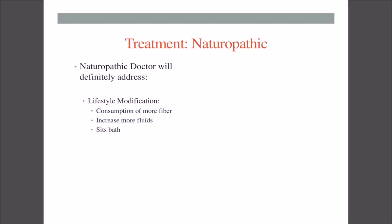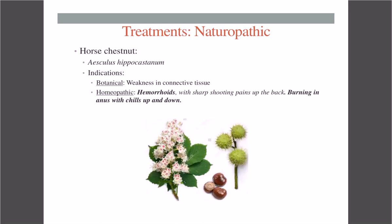For naturopathic treatments, a naturopathic doctor will address lifestyle modification first — more fiber, more fluids, and something called a sitz bath, which is a sitting device like a sauna that covers your whole body excluding your head. From the plant world, horse chestnut (Aesculus hippocastanum) is indicated because there's weakness in the connective tissue, which is what veins are made of — if veins are weak, the connective tissue is weak, so horse chestnut botanicals are indicated.